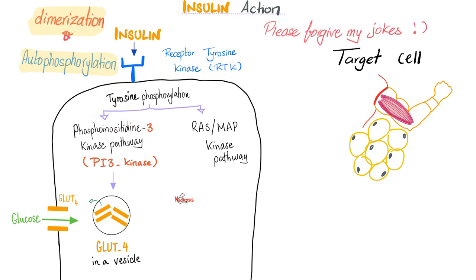Autophosphorylation — I'm self-sufficient. And then I have two pathways: the RAS MAP kinase pathway and the PI3 kinase. It's the PI3 kinase that gets the GLUT4 out of the vesicle — these are basically the doors, and the doors are here in the cell: open the door, get the glucose in. The door is not just a hole in the wall; it's a very complex protein structure.